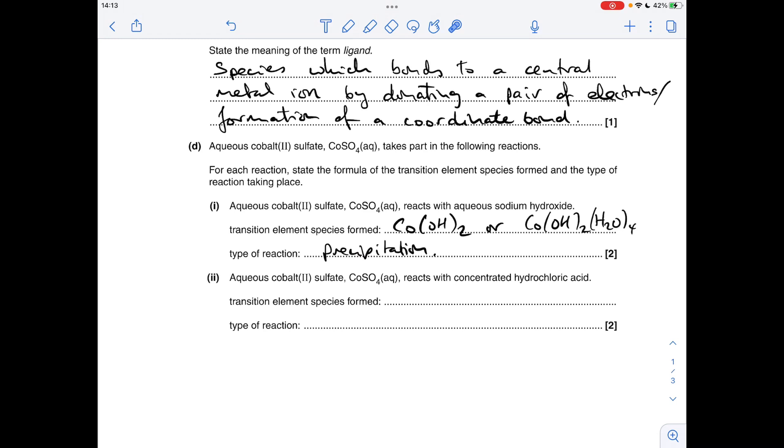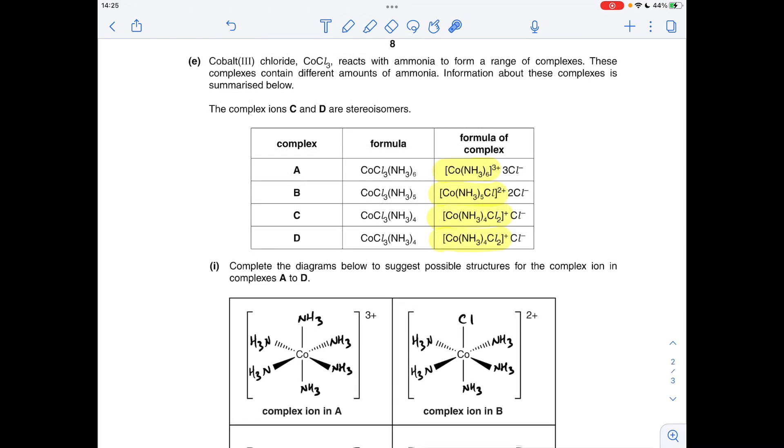So the next part, if we just apply what we know about aqueous copper 2 sulfate, for example. So when that's reacted with concentrated hydrochloric acid we get a ligand substitution reaction where all six of the water ligands—remember it's surrounded by water molecules because it's aqueous—all six of those are substituted for four chloride ligands. So that's going to give this complex ion CoCl₄ in square brackets two minus, and reaction type is ligand substitution.